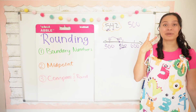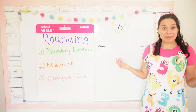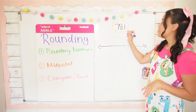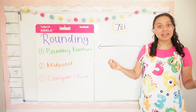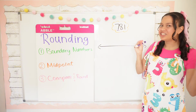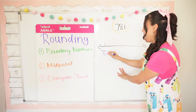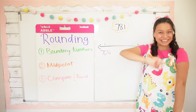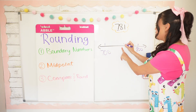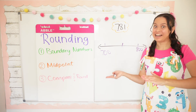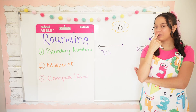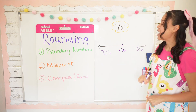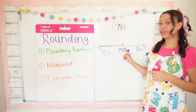Alright besties, let's do example number two. We have the number 781 and we're going to round it to the nearest hundred using the number line. I'm going to underline the hundreds place. Step one: find the boundary numbers — what hundreds family does 781 live in? 700. And the next hundreds family is 800. Step two: find the midpoint. What is the midpoint between 700 and 800? Remember what I said about ending with 50 — that's right, 750.